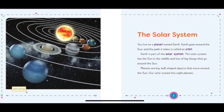The Solar System. You live on a planet named Earth. Earth goes around the sun and the path it takes is called an orbit. Earth is part of the solar system. The solar system has the sun in the middle and lots of big things that go around the sun. Planets are big, ball-shaped objects that move around the sun. Our solar system has eight planets.